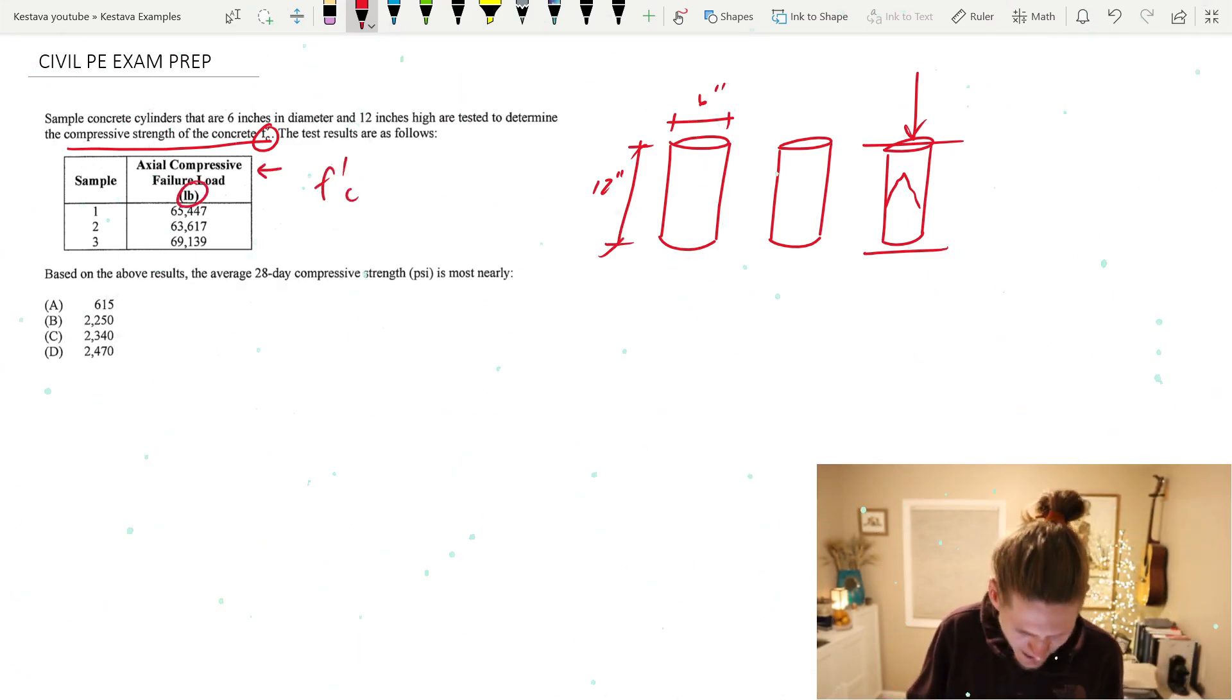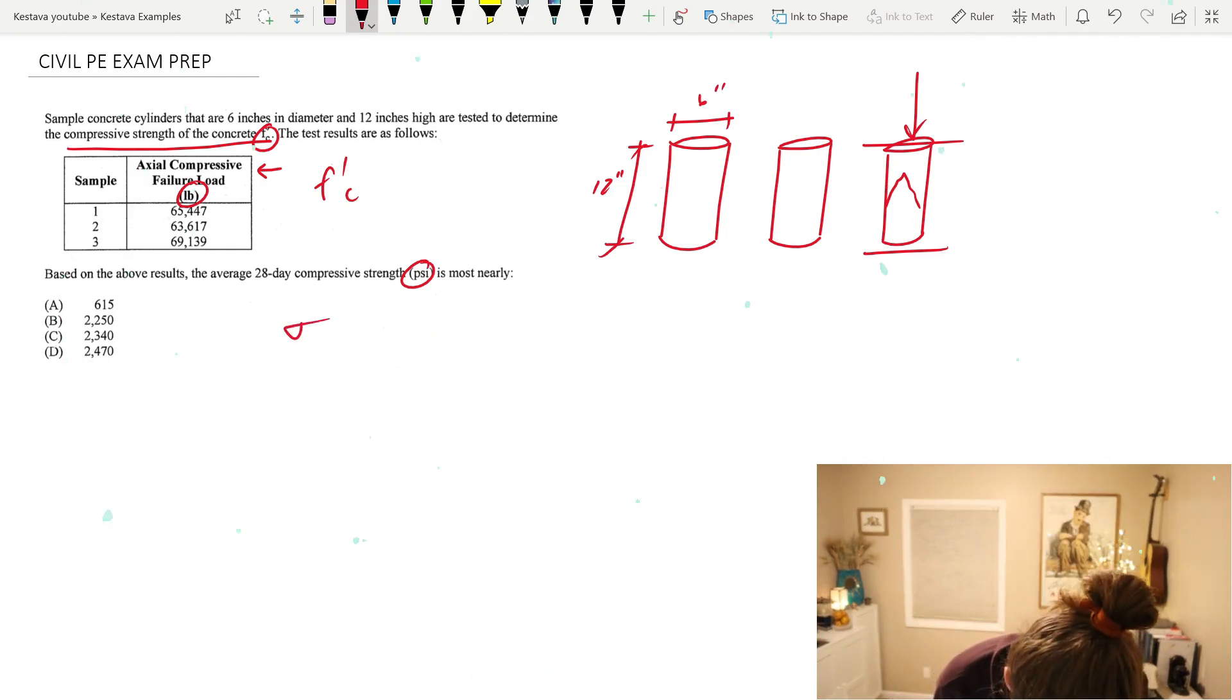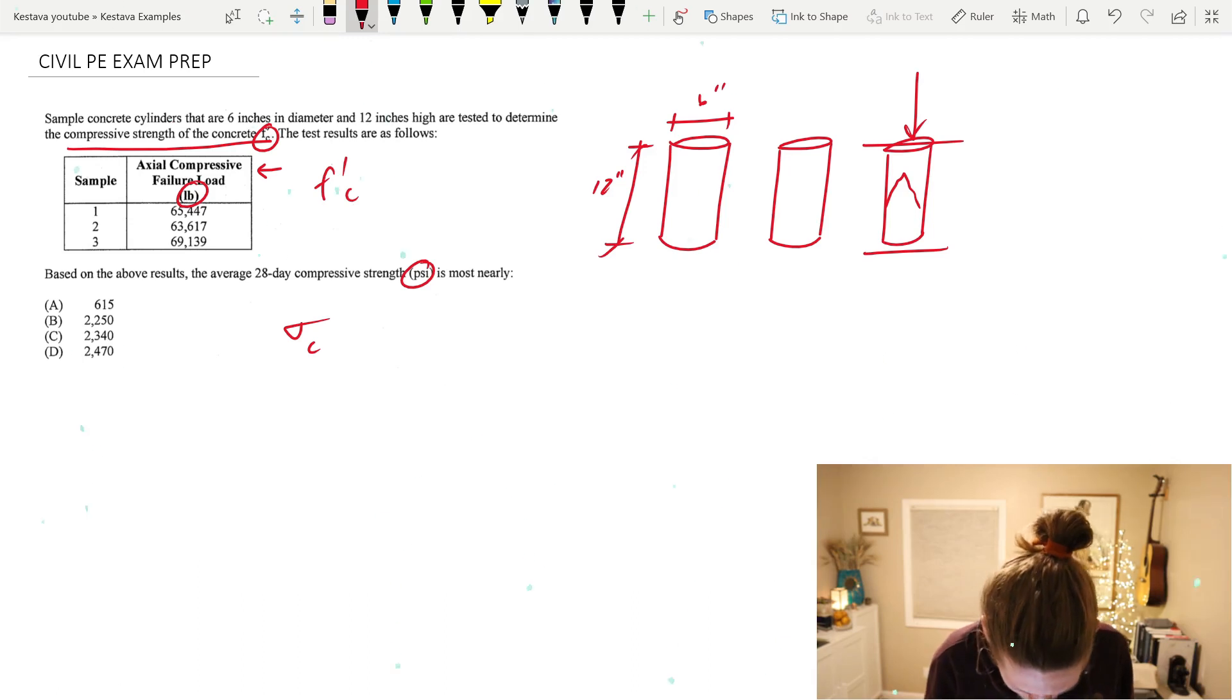We are being asked based on the above results, the average 28-day compressive strength - a unit of measurement that is very common in the professional field. That's kind of your baseline stat for your concrete. And that value is given in PSI, pounds per square inch. So that is a compressive stress.